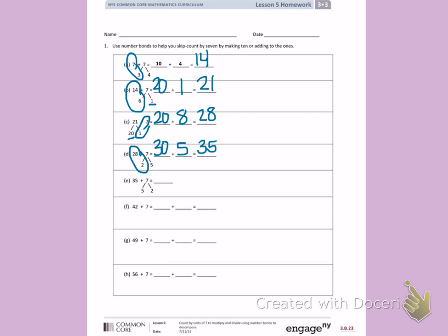Letter E. 7 has been decomposed into 5 and 2. 35 plus 5 is 40, plus 2 more is 42.